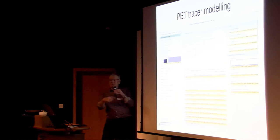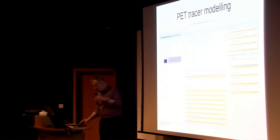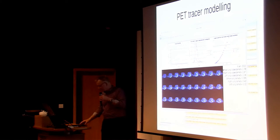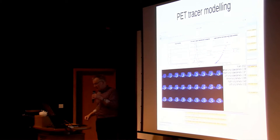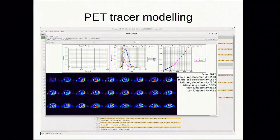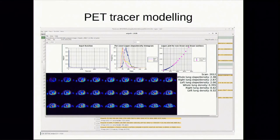Here's an even more complicated workspace — 15,000 nodes — doing modeling of tracer uptake in cancer patients and looking for evidence of pulmonary disease. VIPS does work at these large scales.